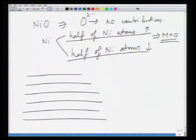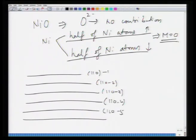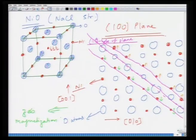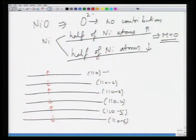Essentially, in the FCC sub-lattice of nickel there are two sub-lattices: one with spin orientation up and another with spin orientation down, giving rise to zero net magnetization. This is what anti-ferromagnetism is.